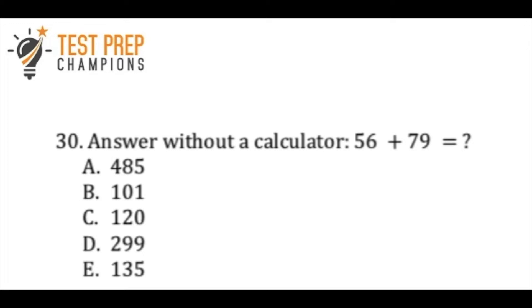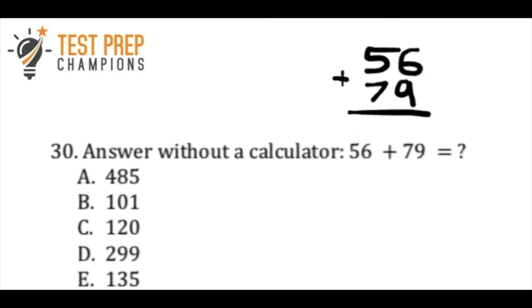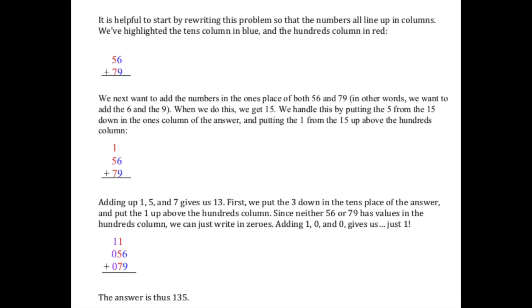Okay, so the next question is answer without a calculator. 56 plus 79. Pause the video, try this out, and then we'll go over it. Okay, so the best way to do a question like this is to just line it up vertically and you think about it like, what is 6 plus 9? 6 plus 9 is 15. So I put the 5 here, carry the 1 up here. What is 1 plus 5? That's 6. What's 6 plus 7? That's 13. I bring it down. That's 135. E was hopefully what you picked. And if you have trouble with this, I'm showing the written solution. And you can pause, take your time, and then when you're ready, we'll go on.